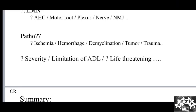Regarding pathology: you need to determine whether it is ischemia, hemorrhage, demyelination, tumor, or trauma. By history you should also assess the severity — what is the limitation of activity of daily living, whether the patient can carry out daily functions, and whether the disease is life-threatening. All these things should be highlighted in the history.